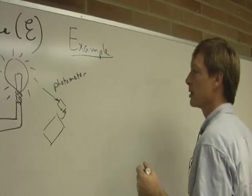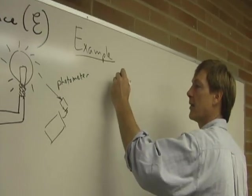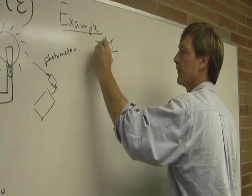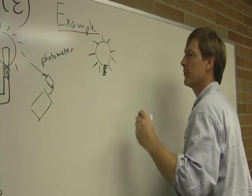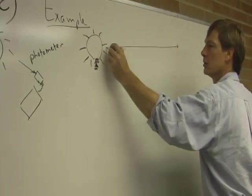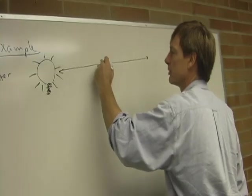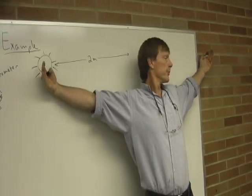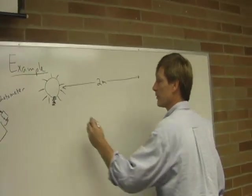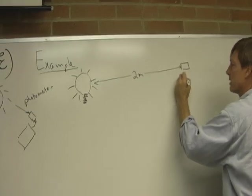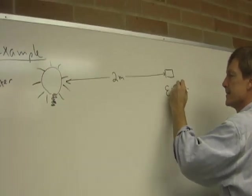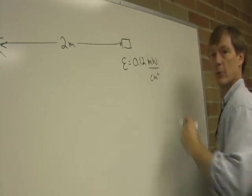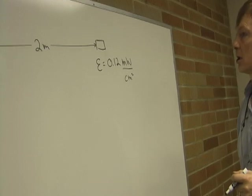And from the photometer, let's say we find that the irradiance of a bulb, there's my bulb, and let's say at a distance of, not to scale, but let's say that's two meters, six feet, at this distance. And the irradiance here as measured is 0.12 milliwatts per square centimeter. That's my irradiance.